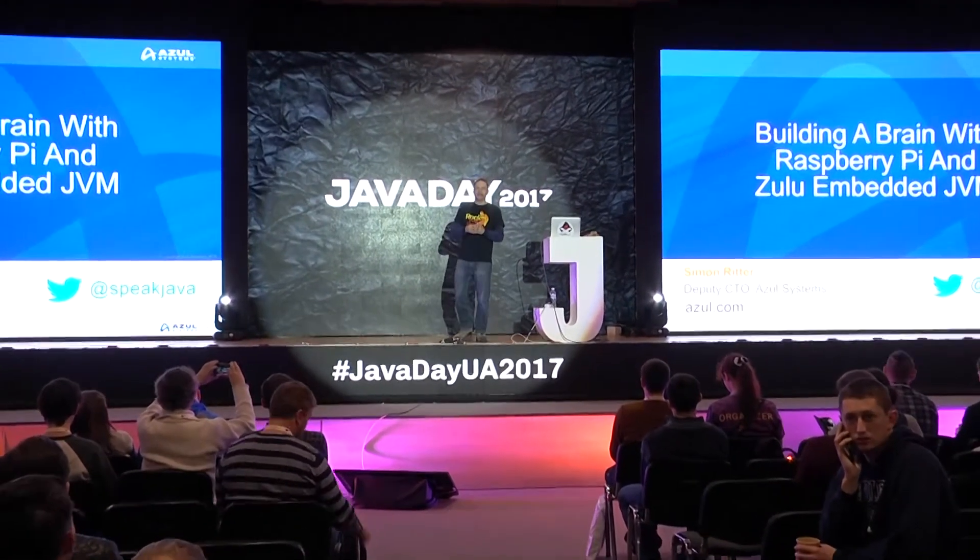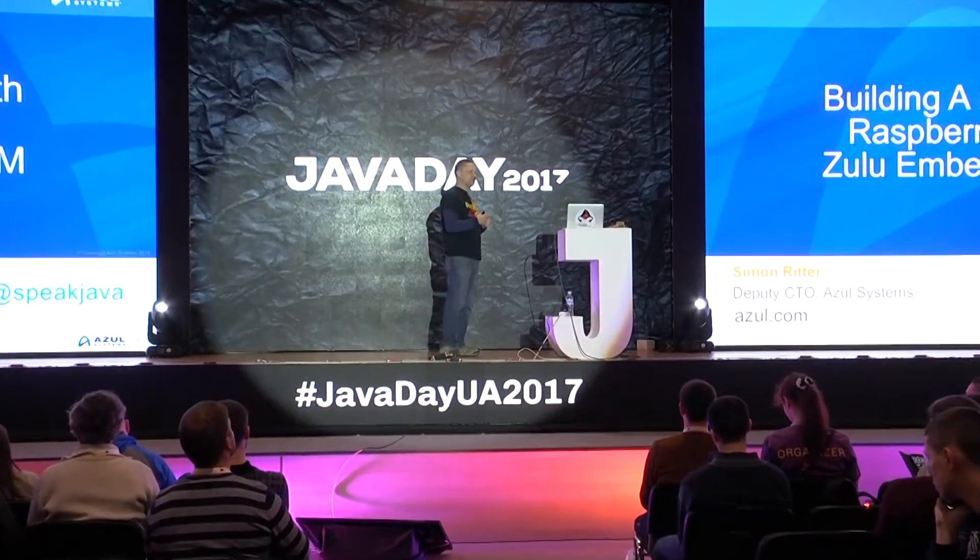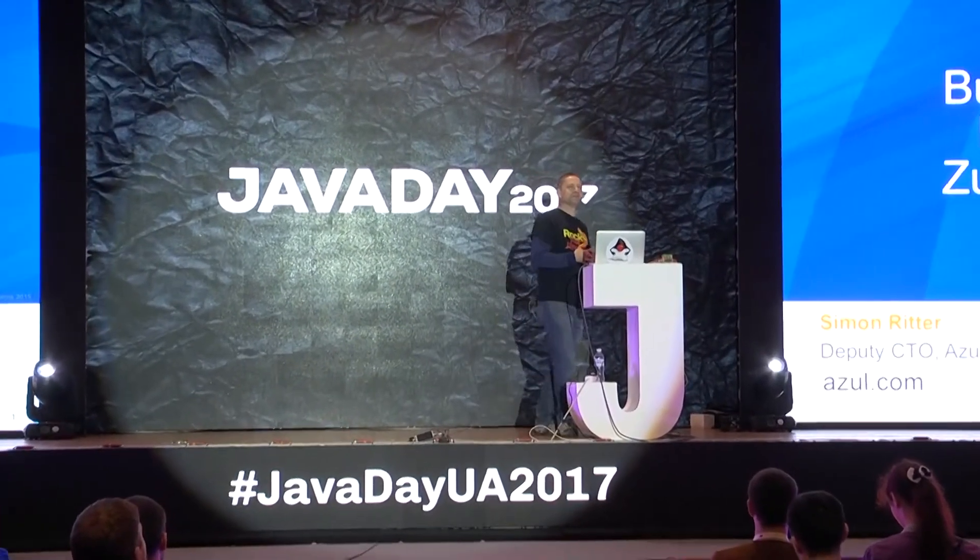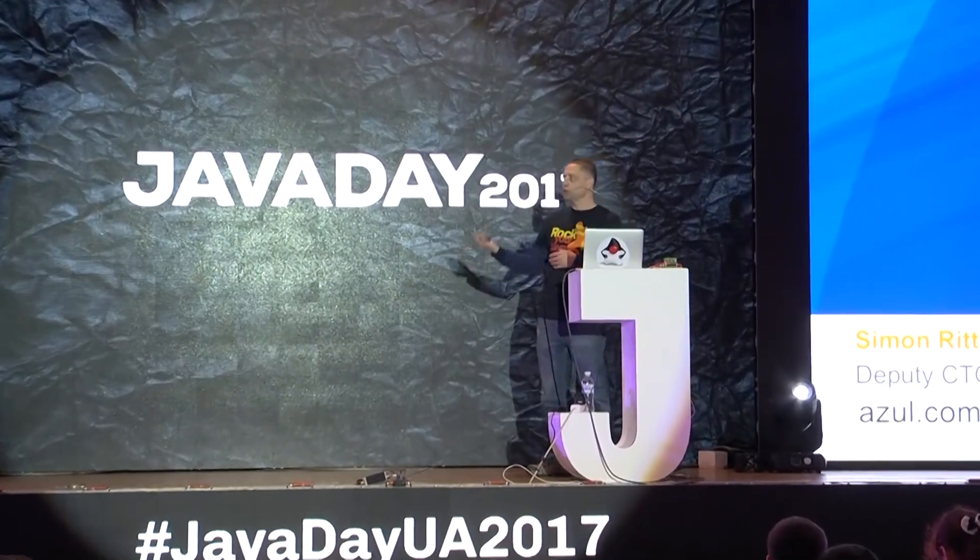I'm going to talk about a project I've been working on for probably about six months now. I really wanted to come up with something weird and wonderful to use Java for. One of the things that's very popular and very topical is machine learning and deep learning. So this is what I've come up with: building a brain with Raspberry Pi and Zulu embedded JVM.